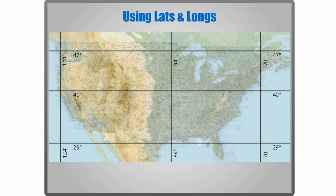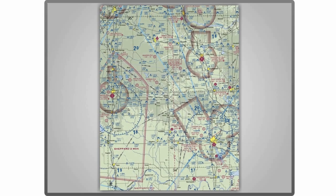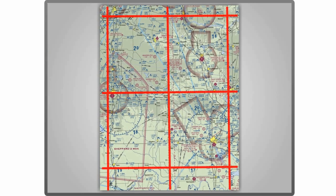That's the basic lat-long layout used on sectional charts. Let's see how it actually works in a close-up view. The sectional portion seen here shows the area near Ardmore, Oklahoma. The latitude and longitude lines form four quadrangles. The line of longitude on the right lies at 97 degrees west, and the line of longitude on the left is at 98 degrees west. A third line of longitude splits the difference between them.